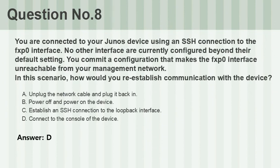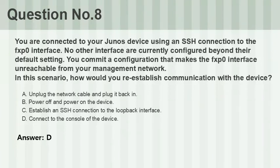Question number eight: You are connected to your Junos device using an SSH connection to the FXP0 interface. No other interfaces are currently configured beyond their default settings. You commit a configuration that makes the FXP0 interface unreachable from your management network. In this scenario, how would you re-establish communication with the device? A. Unplug the network cable and plug it back in. B. Power off and power on the device. C. Establish an SSH connection to the loopback interface. D. Connect to the console of the device. Answer: D.